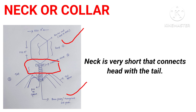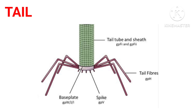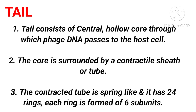The third main part of a Bacteriophage is the tail, where you can clearly see the base plate, spikes, tail fibers, and the tail tube. The tail of a Bacteriophage consists of a central hollow core through which phage DNA passes to the host cell. This core is surrounded by a contractile sheath or tube, and the contracted tube is a spring-like structure which has 24 rings, with each ring formed of 6 subunits.